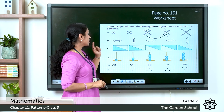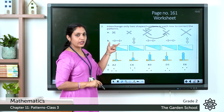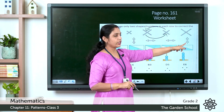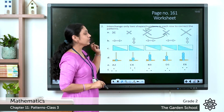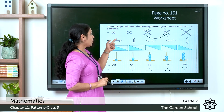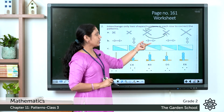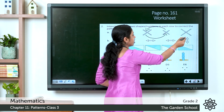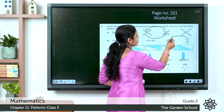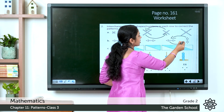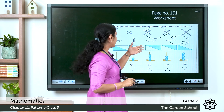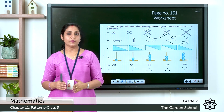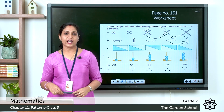In the second row, the pattern should be horizontal arrow, vertical arrow, horizontal, vertical — but it's not in the correct order, so interchange the misplaced arrows accordingly. Complete the rest of the exercises similarly. With this we finish the chapter on patterns. We'll meet in the next class — thank you.